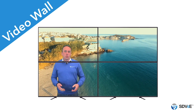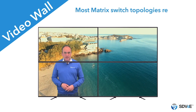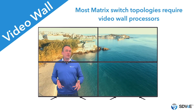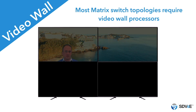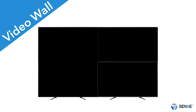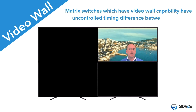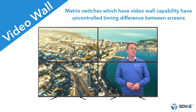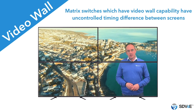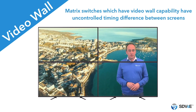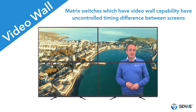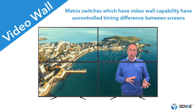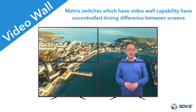Video walls are commonplace in ProAV, and again, with a matrix switch topology you would need separate video wall processors to achieve it. Some high-end matrix switch platforms do include a rudimentary video wall feature, but because of the matrix architecture, there's an uncontrolled timing difference between the screens. This creates distracting visual effects for any content where an object moves between screens.